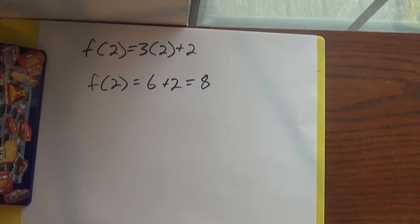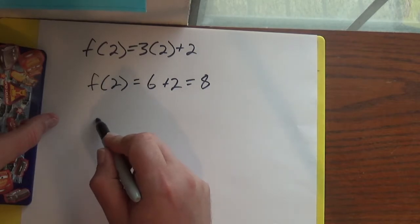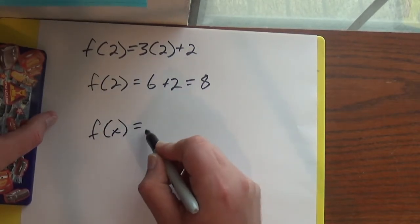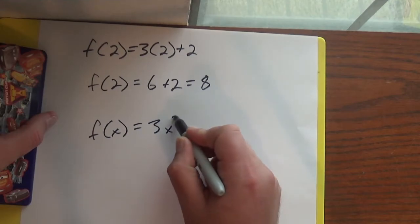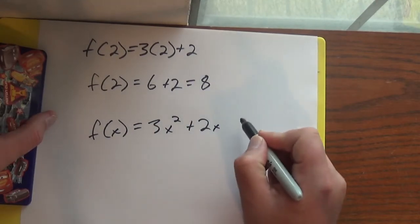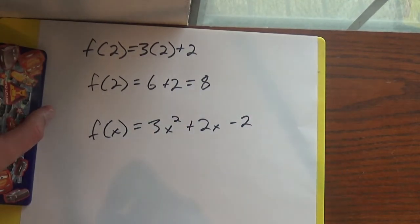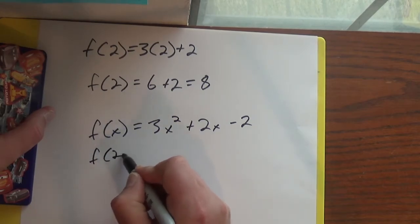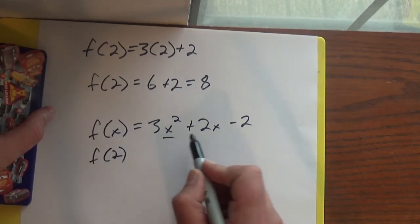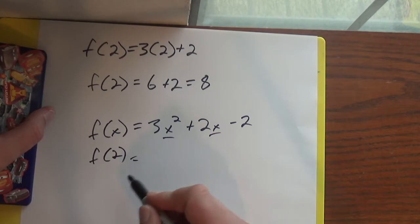We could have uglier ones. f(x) = 3x² + 2x - 2. So if we did f(2) for this one, I need to put a 2 here and here. Use parentheses.